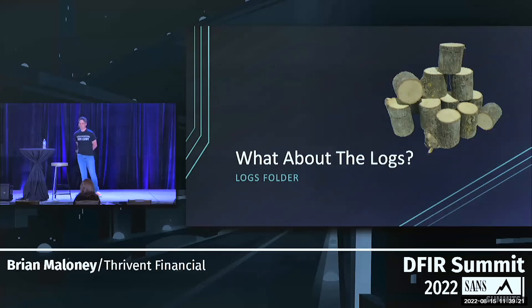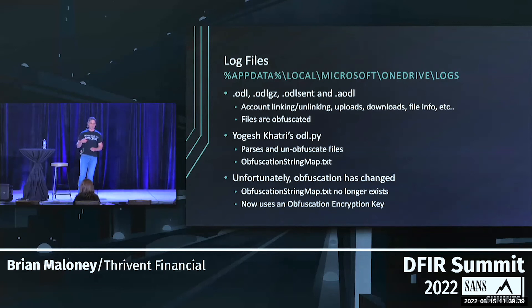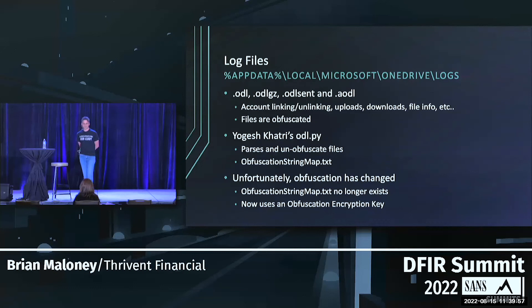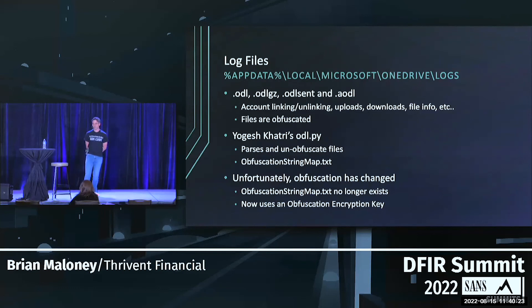There's one more thing — the log files. In the user's AppData Local folder, you have what are called ODL logs. These store various information like the syncing of OneDrive, user account linking and unlinking, uploading, downloading — pretty much anything that happens on the back end. These files are actually obfuscated. Yagesh, back in February I think, created a parser to unobfuscate these files using an obfuscation stringmap.txt file. Unfortunately, a couple months later Microsoft changed things up and this file no longer exists. Now it uses some sort of encryption key that really hasn't been solved yet.